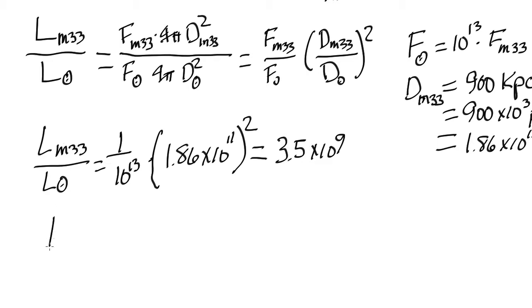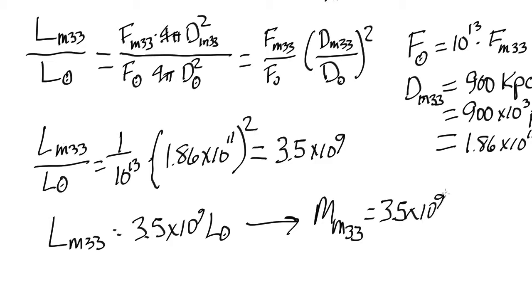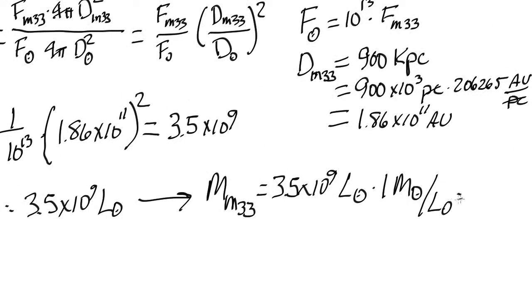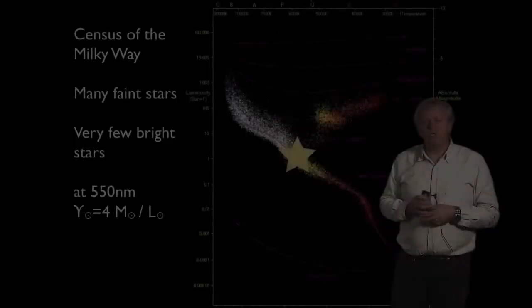That answer would be that L M33 is equal to 3.5 times 10 to the 9 L Sun. And that then enables us to say that the mass of M33 is equal to 3.5 times 10 to the 9 L Sun times that ratio of 1 M solar per L solar, or 3.5 times 10 to the 9 M solar.